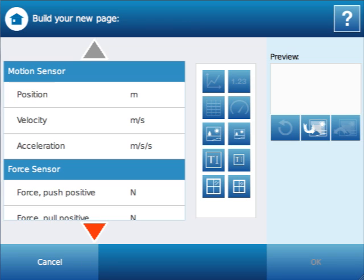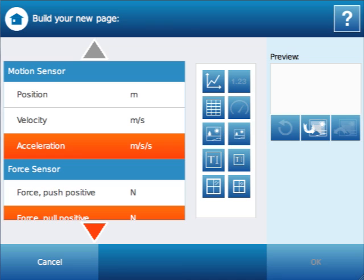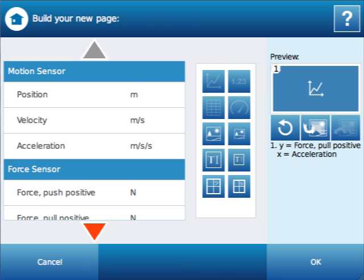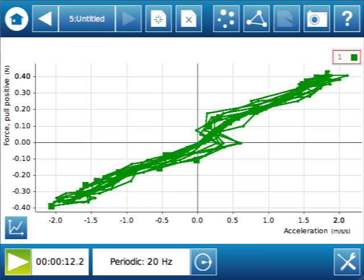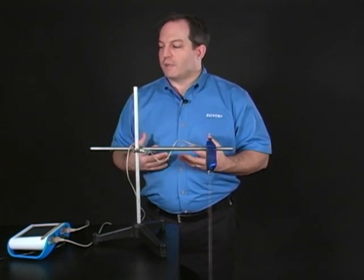And we're going to say force pull positive and acceleration on the same graph this time. And we just verify that force is, in fact, the y-axis and that x is, in fact, on the acceleration. So we're going to go ahead and say OK. As you can see, a little variation that is a fairly linear relationship of force versus acceleration. So now students are getting an idea that there is something going on there.